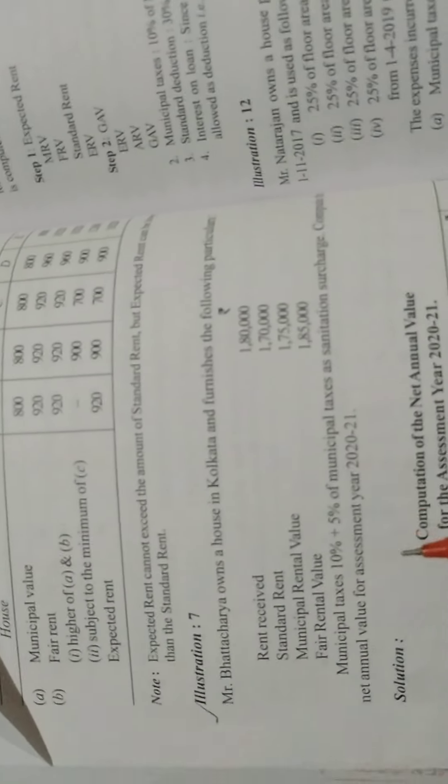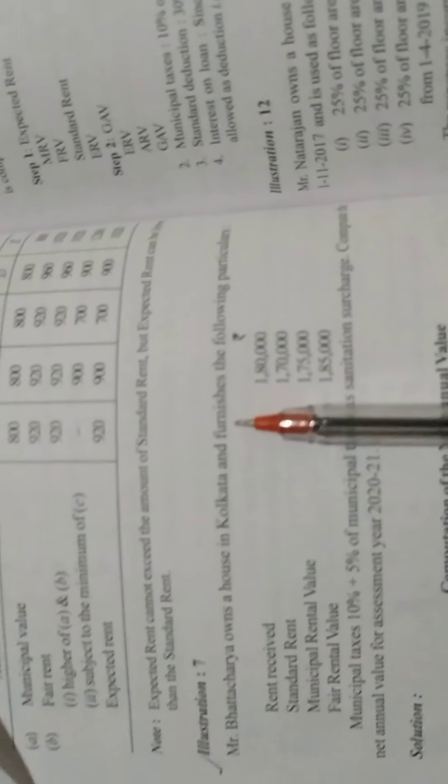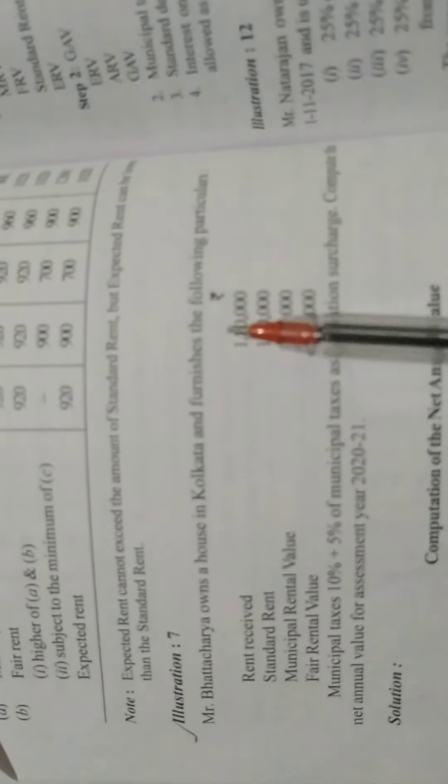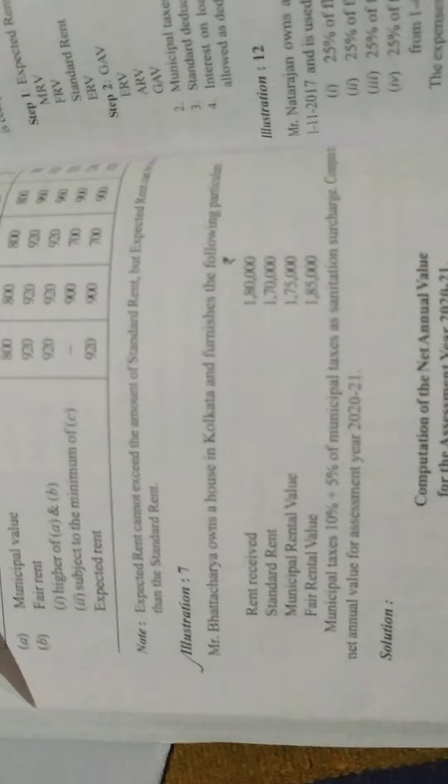Next example: Mr. Bhattacharya owns a house property in Kolkata and furnishes the following information. From that information you have to find out income from house property of Mr. Bhattacharya.